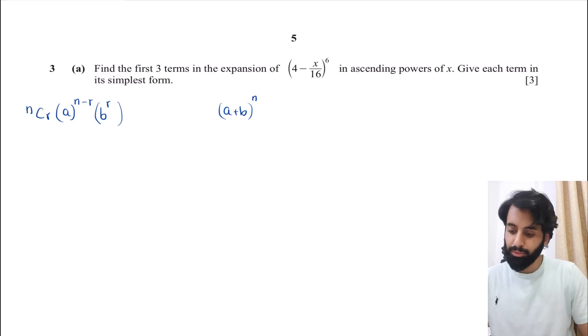So we start with r as 0 and then we gradually take it up. And depending on the number of terms that we want, for example, if you want the first three terms, that means r is going to be 0, 1, and 2. And if you want the entire expression, you're going to start from 0 and take it all the way up to n, which in this case happens to be 6. But as the question mentions you just want the first three terms, we're just going to stop when we have the first three terms.